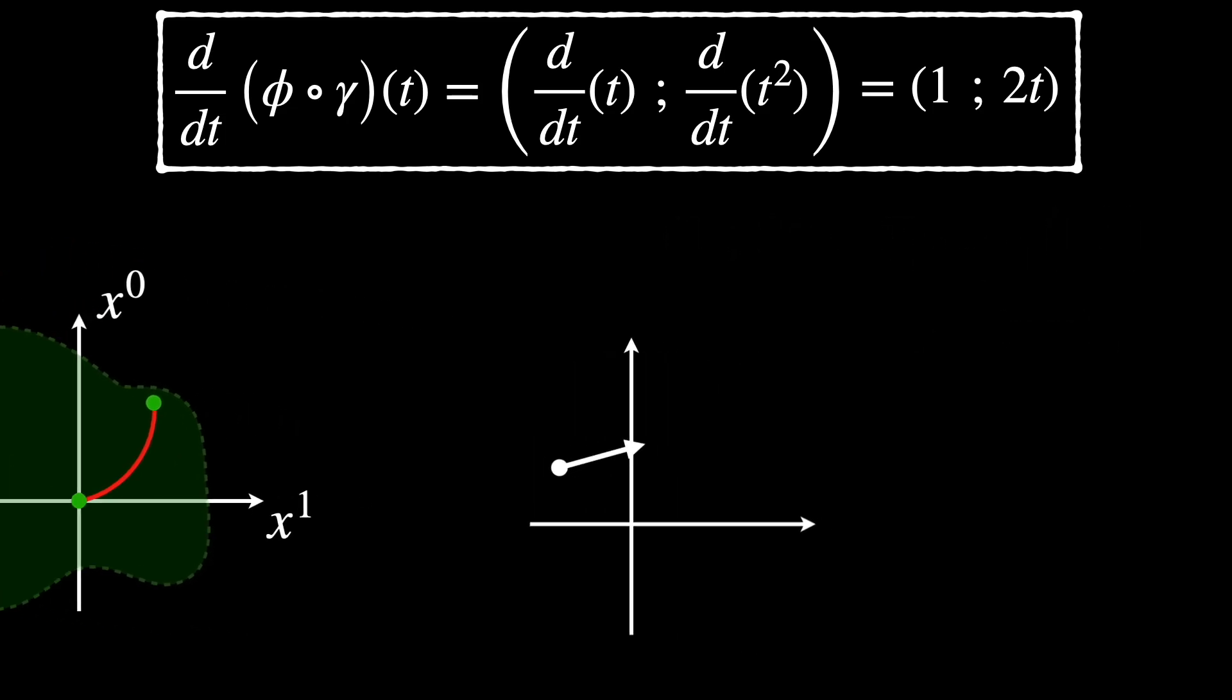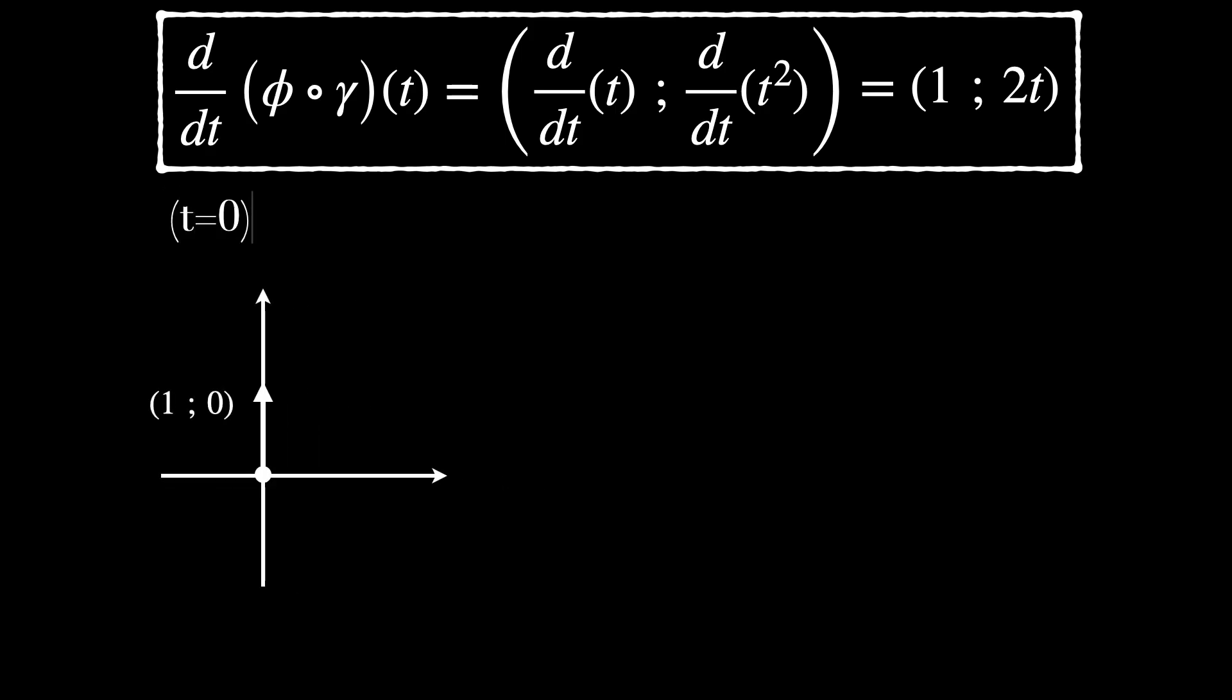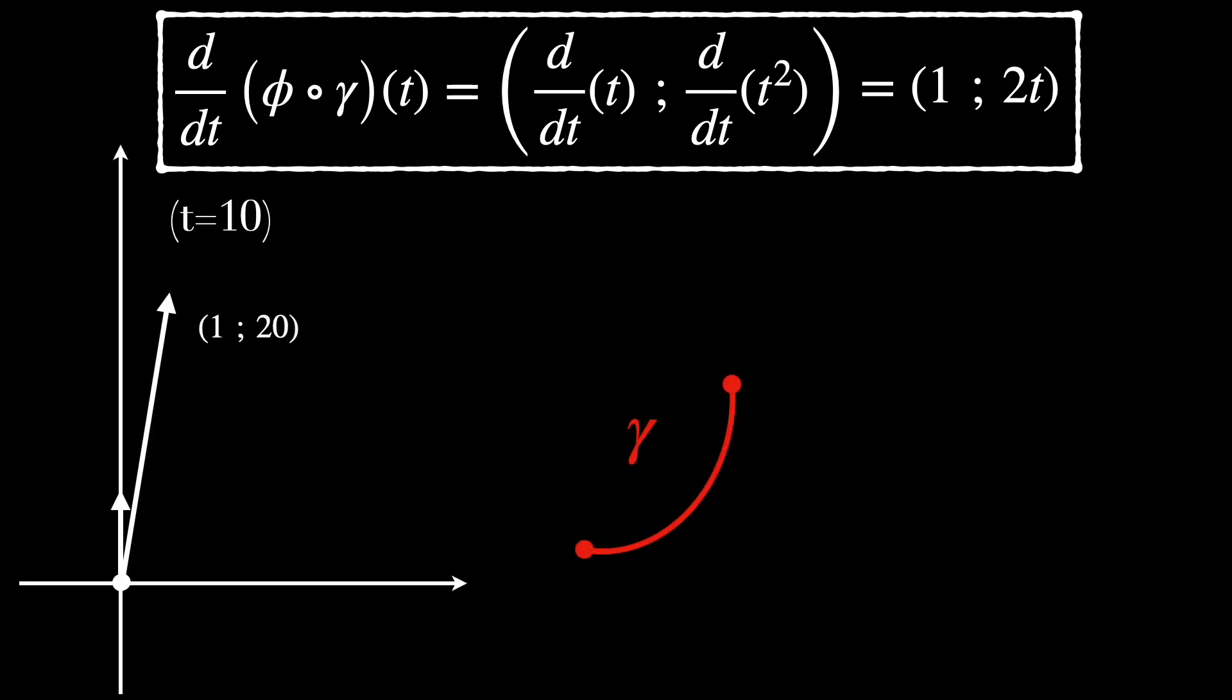We notice that for T equals 0, 1, 0 is the tangent vector or velocity vector, if you will, at the initial point Gamma of 0 in the manifold M. And for T equals 10, 1, 20 is the tangent vector at the final point Gamma of 10 in the manifold M. We can also see that this tangent vector increases linearly from the initial point to the final one along the curve Gamma.